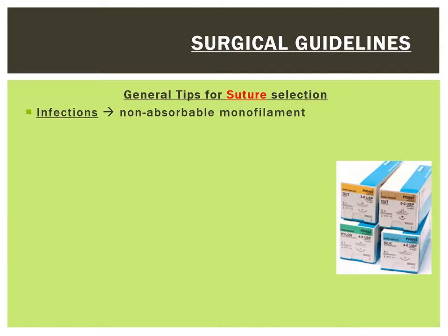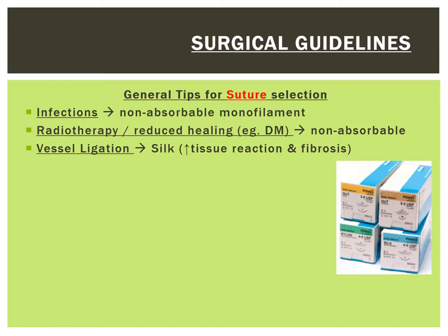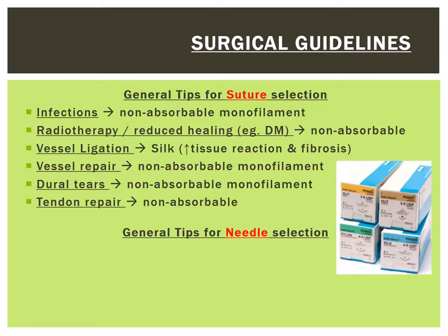Here are some general tips for suture selection. When dealing with infections, try to use a non-absorbable monofilament to minimize harboring of any bacteria. In wounds with radiotherapy or reduced healing — for example in diabetics — try to use a non-absorbable suture that can remain for a longer period of time. For vessel ligation, try to use a suture with lots of tissue reaction that can cause fibrosis and scarring, for example silk. With vessel repair, try to use a non-absorbable monofilament. For dural tears, similarly use a non-absorbable monofilament. For tendon repair, you can use a non-absorbable suture or an absorbable suture if you feel that the healing time will be less than 60 days.